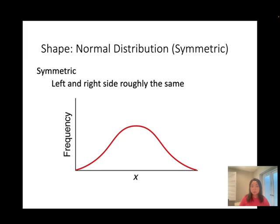For shape, the first type is normal distribution, also called symmetric. Symmetric means the left and right sides are roughly the same — if you draw a line down the middle, the left-hand side will be roughly the same as the right-hand side. This is the normal distribution, sometimes called the bell shape, and this is what we're looking for in statistics.